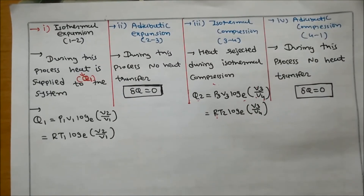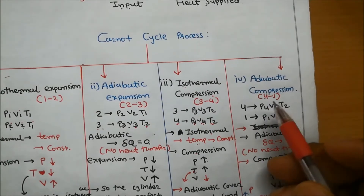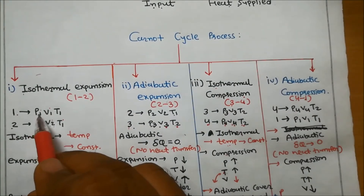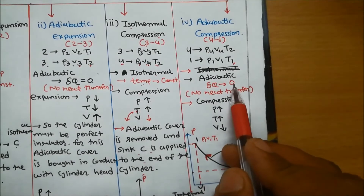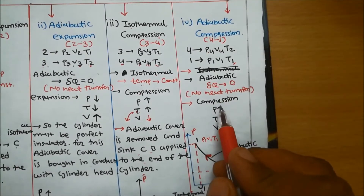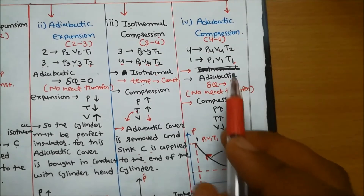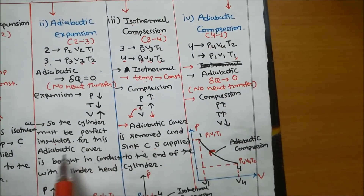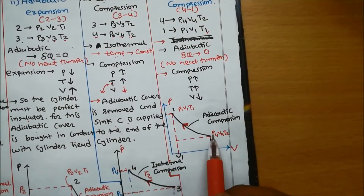The adiabatic compression process takes place from point 4 to point 1. At point 4, pressure is P4, volume is V4, and temperature is T2. At point 1, pressure is P1, volume is V1, and temperature is T1. Adiabatic compression means no heat transfer — delta Q equals zero. In compression, pressure increases, temperature increases, and volume decreases. The cylinder must be a perfect insulator, so the adiabatic cover is placed in contact with the cylinder head.